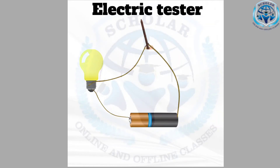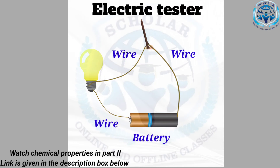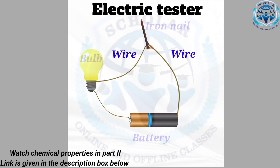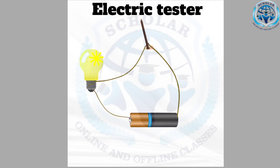Now look at the electric tester or circuit. You will find a battery, three wires, one iron nail, and one bulb — all connected in a sequence. The bulb will glow because electricity is flowing through the circuit. This is because metals are good conductors of electricity and iron is a metal.